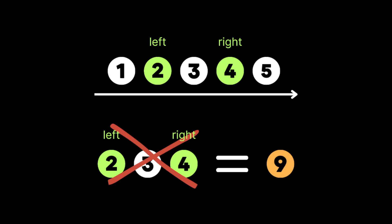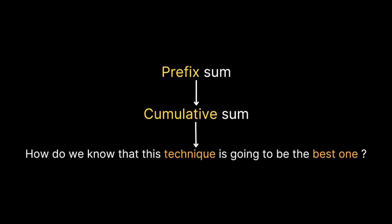we need to find the sum without adding them up one by one. To solve this problem, we're going to use a technique called prefix sum or cumulative sum. But how do we know this technique is best for solving this problem? First, we check if the question asks us